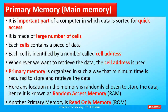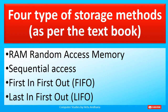Any location in the memory is randomly chosen to store the data. Hence it is known as random access memory. Another kind of primary memory is read-only memory, which I will explain in detail in the next video. There is also a small topic describing four different types of storage methods: RAM (random access method), sequential access method, first in first out (FIFO), and last in first out (LIFO). I will explain all these now.